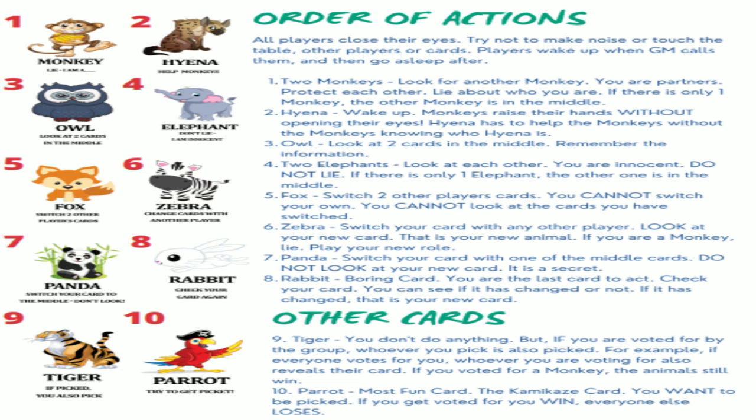Tell the students that as the GM you will move things around — they can just point and you will do it. Before you start, write down all the animals and their abilities on the board so that students can check what the animals are and what abilities they have. Information is very important in this game. After all the students have checked what animals they are, they go to sleep and you as the GM will call them out one by one to do an action.